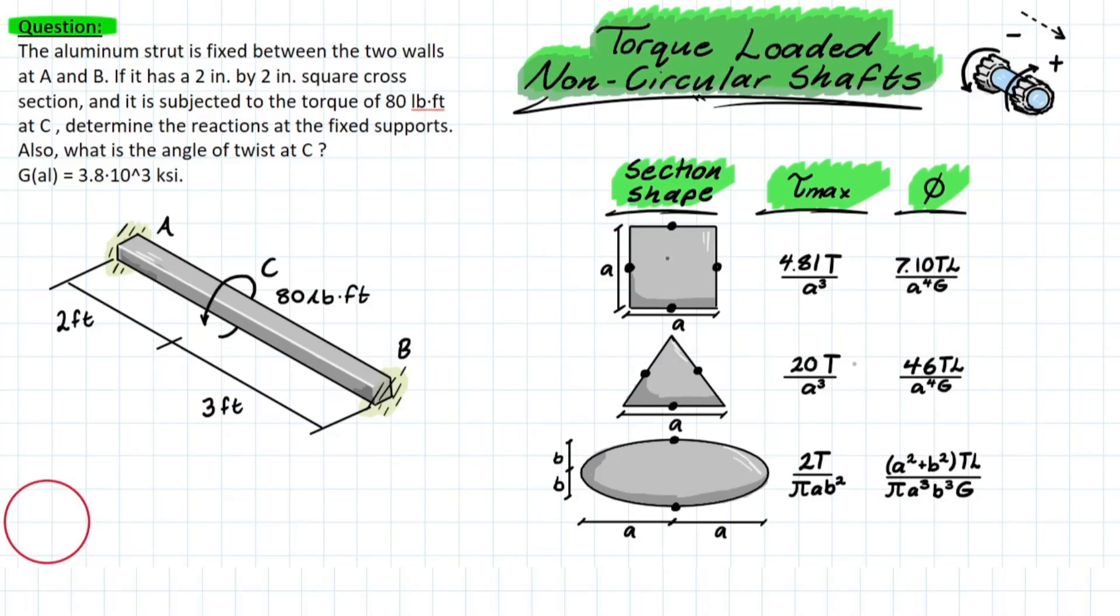We can start by talking about what was the theory for the circular shaft. So the theory for the circular shaft is when we were looking at the cross section, we had an axis symmetric section. And what that meant was that we had a uniform shear stress development.